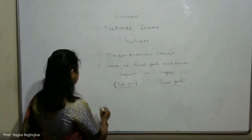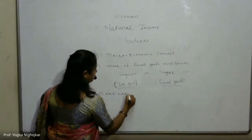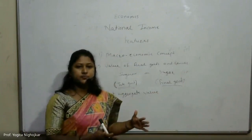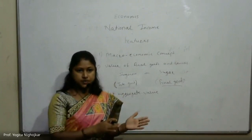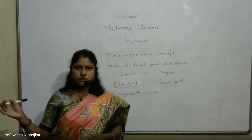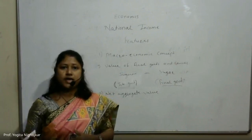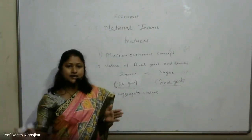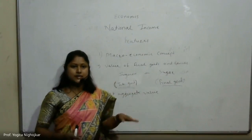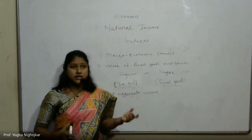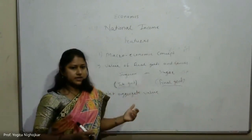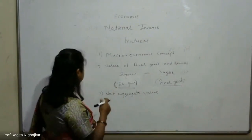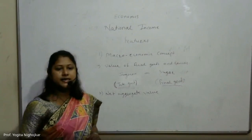The next feature is net aggregate value. National income includes the net value of goods and services produced and does not include depreciation cost. Depreciation means the monetary value of an asset decreases over time due to use — wear and tear. This decrease is measured as depreciation. Machinery, equipment, and currency are some examples of assets that depreciate over a specific period of time. The next feature is net income from abroad.